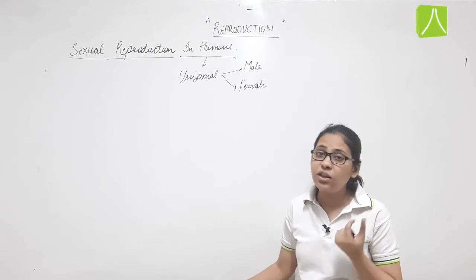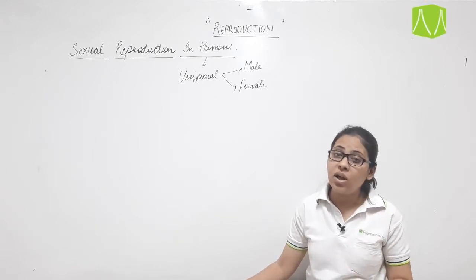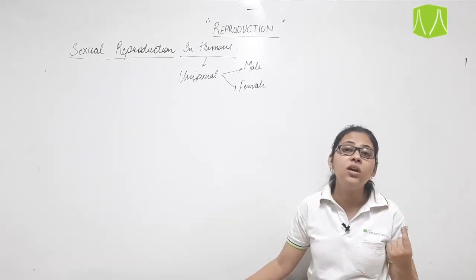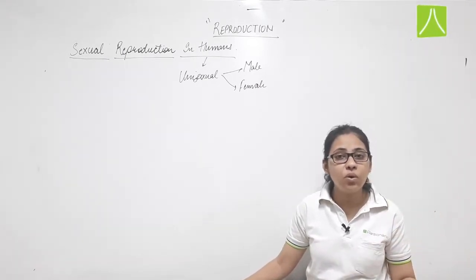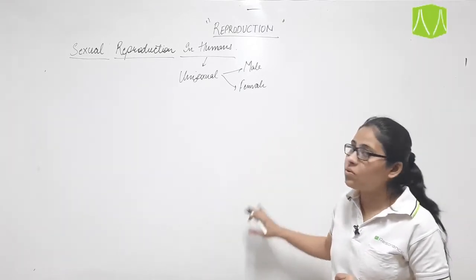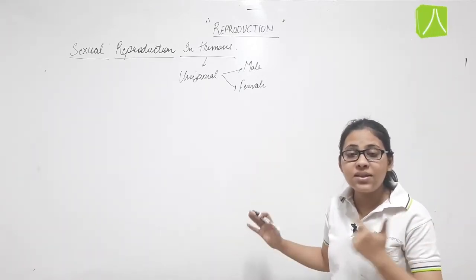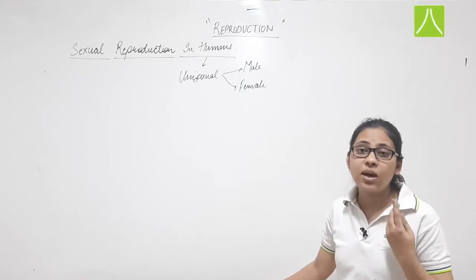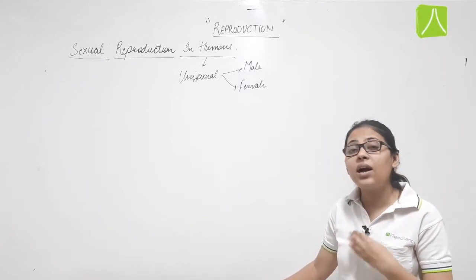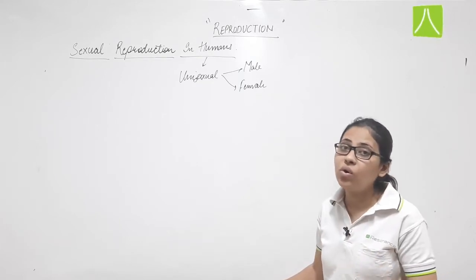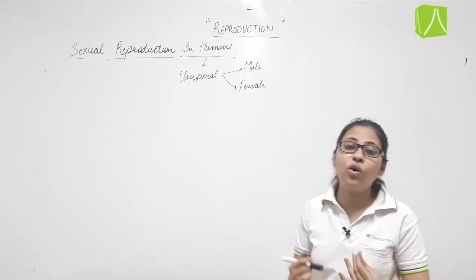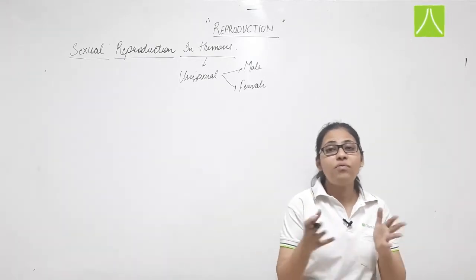The requirement of gametes means gametogenesis will occur, and the fusion of those gametes will also occur. Humans are unisexual. We will study how gametes form — that is, gametogenesis — and we will name and study the organs in the male and female where gametes are made.